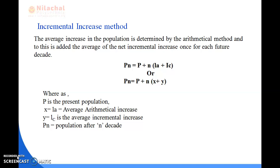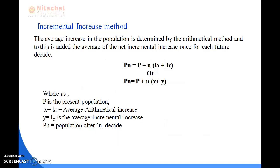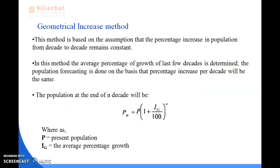In the previous session we discussed the incremental increasing method and the problems we will be doing in the arithmetic increasing method or geometric increasing method. Here is the formula for the geometrical increasing method: Pn equals to P into (1 plus Ig divided by 100) to the power n.